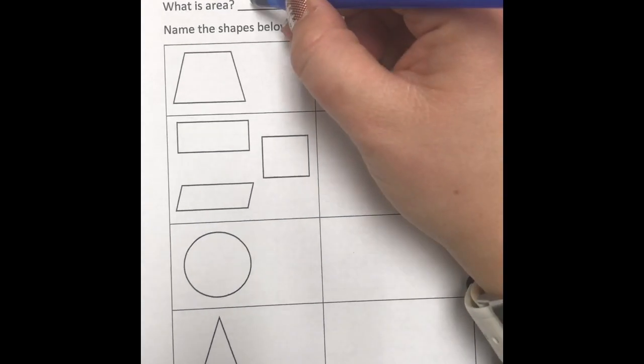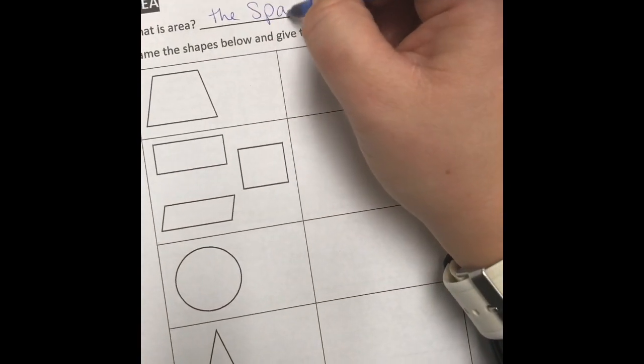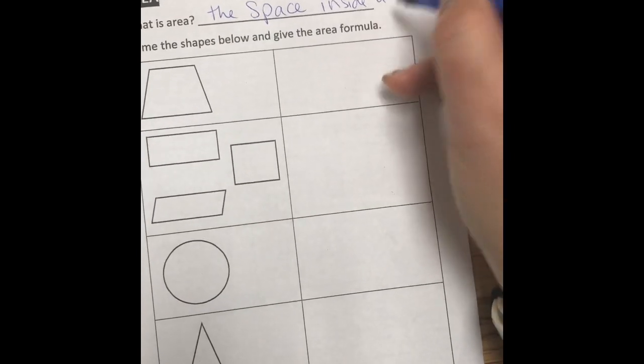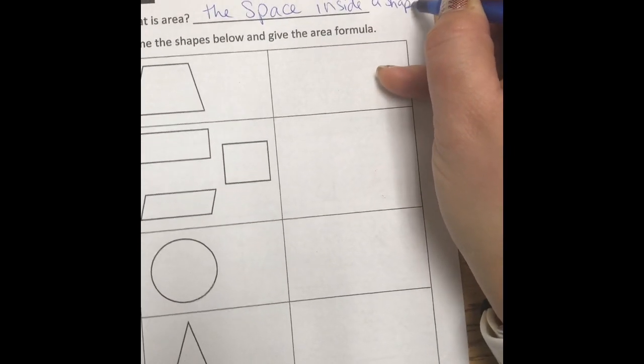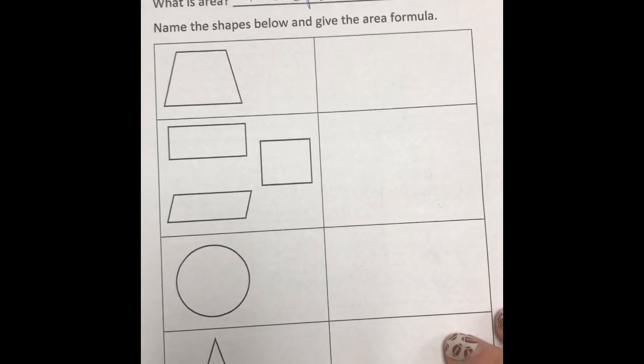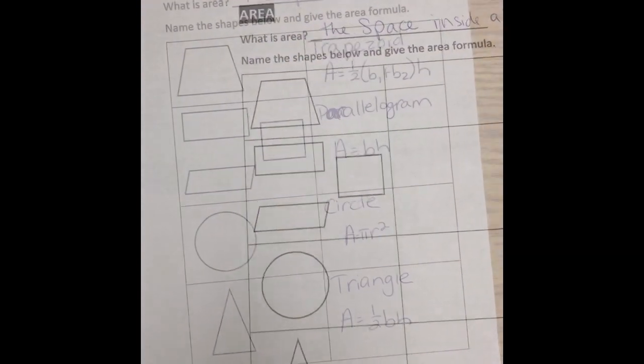Okay, so we're going to come back to those word problems. Now we're looking at what is area. And area is the space inside a shape. Of course, we're just talking about 2D shapes right now. It says name the shapes below and give the area formula. So pause the video and do that real quick. Again, use your formula chart to find the formulas. And then come back and check your work.